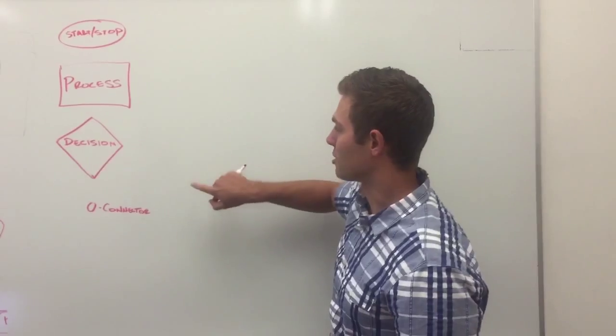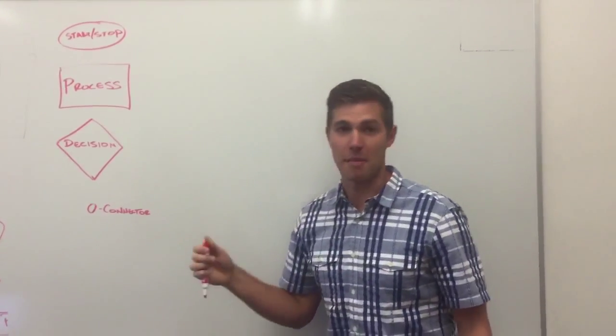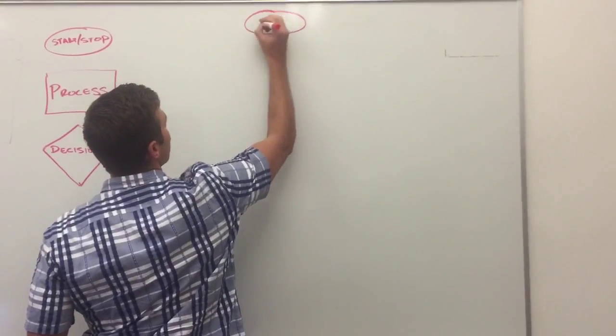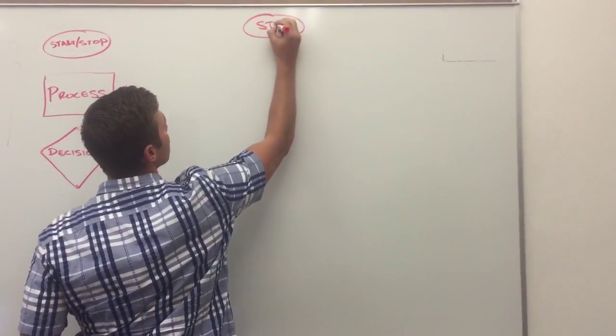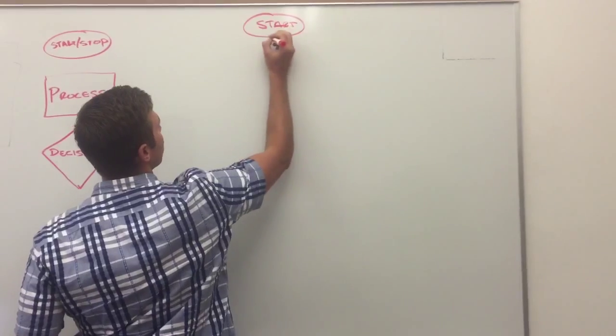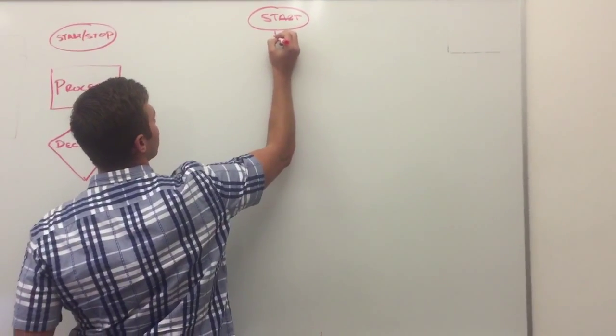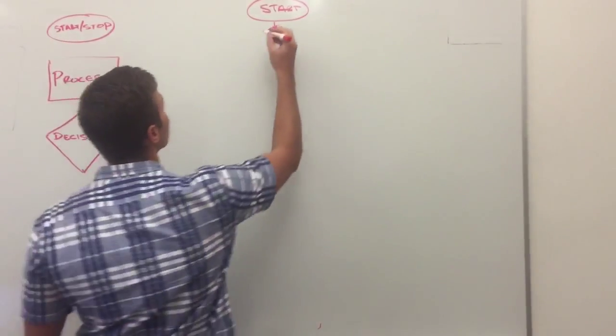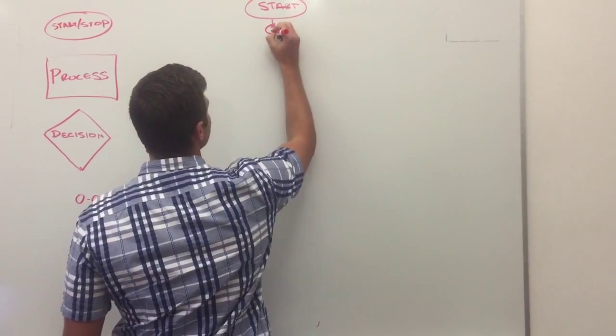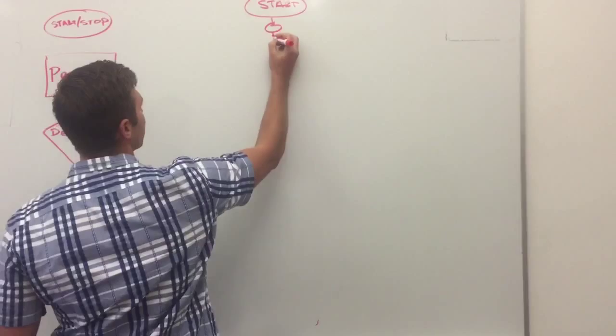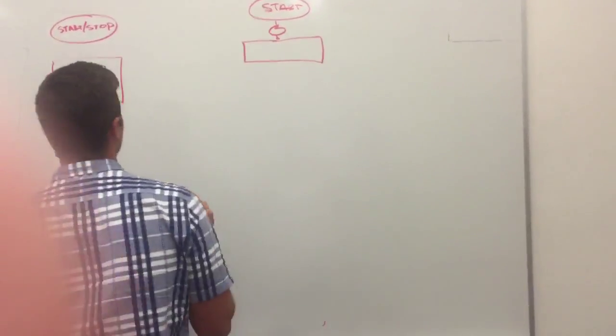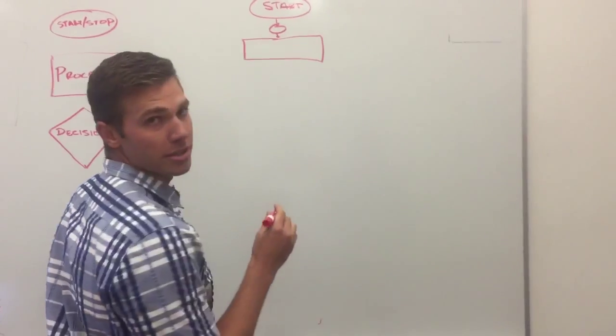Now we'll go ahead and start a simple process making a peanut butter and jelly sandwich. We'll start up here with our start symbol, and we're going to add in a little connector right here, and you'll see why we're going to add that in here in just a moment. So the first thing we're going to do, we've got a process, and the customer is going to order a sandwich.